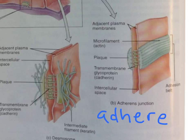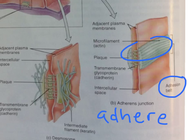These junctions act like strong seam welds in metalwork. They resemble belts that encircle the entire cell, and form in epithelial tissues what are called adhesion belts because of this. Adherence junctions help prevent epithelial tissues from being pulled apart during muscular contraction, such as when food is moved through the intestines.